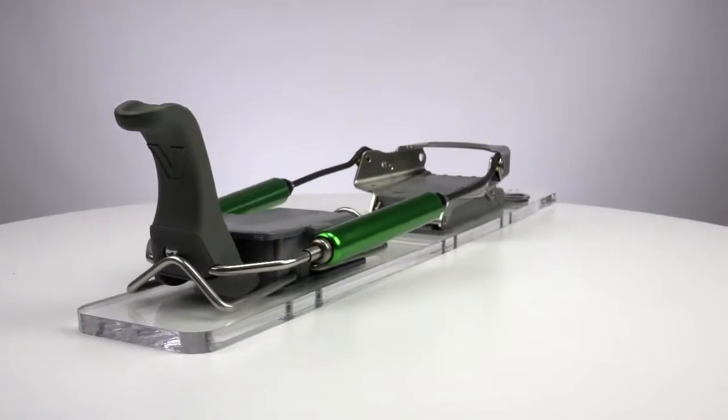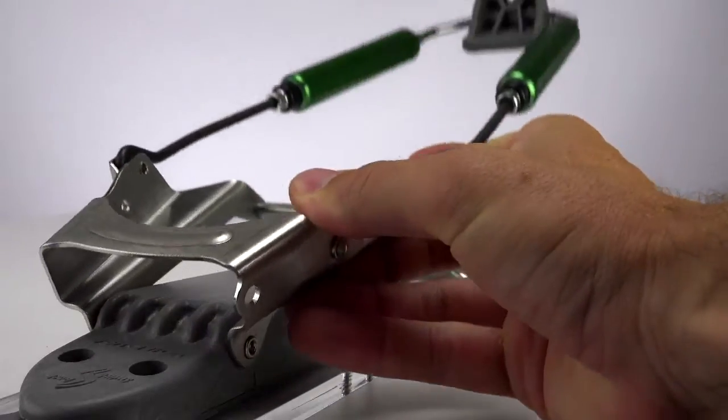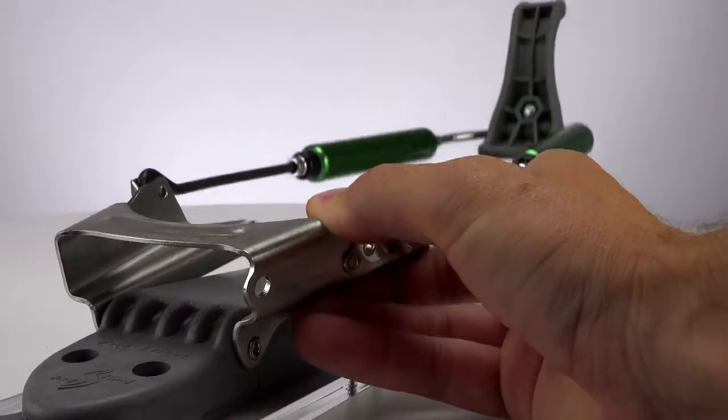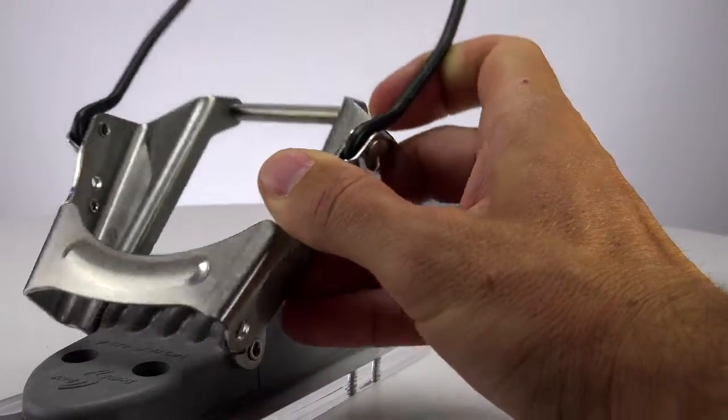The cartridges are the same stiffness as the Switchback. The Free Pivot allows you to ascend with zero heel resistance. This allows for easier trail braking and energy savings while touring.